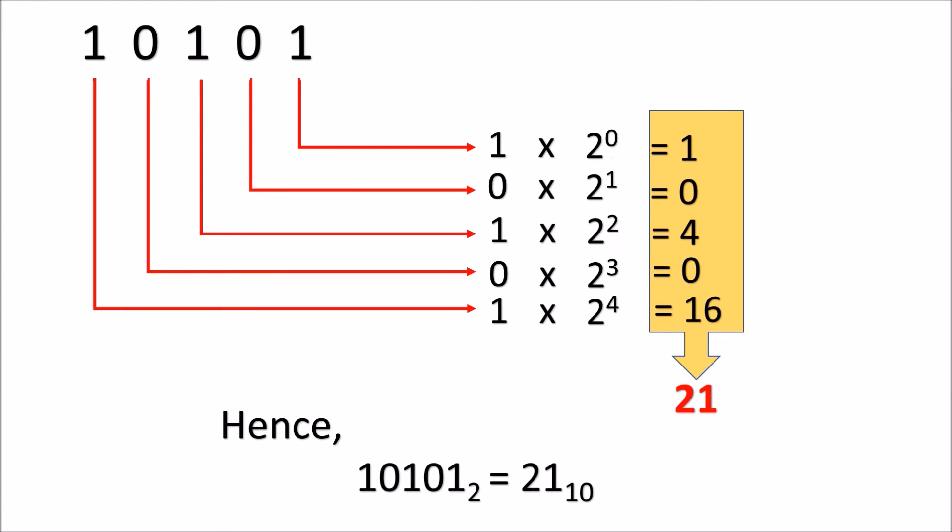Now let us try another example. Let us convert 10101, base 2 to decimal. So the first value, 1 x 2 to the zeroth power. That is 1.